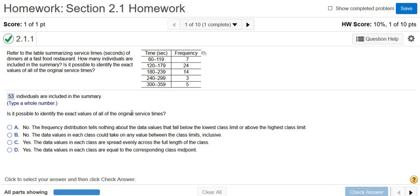So no, it's not going to be possible to identify all of the service times. Because all we know, for example, is that 7 people had service times that fell somewhere between 60 and 119. We actually don't know what those times are. So we can't actually retrieve the data from a frequency table.